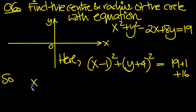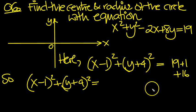So, what have we got then? We've got x minus 1 squared, plus y plus 4 squared, equals 19 and 17. 19 and 17 is 36.